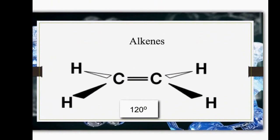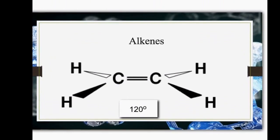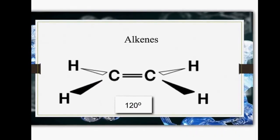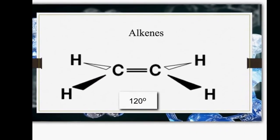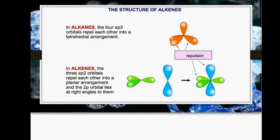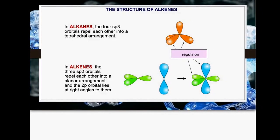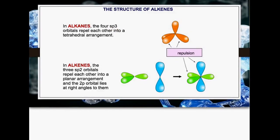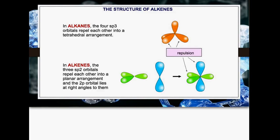This alkene is ethene. The angle between the bonds is 120 degrees and it forms a flat or planar structure. This diagram in orange shows a carbon with four orbitals around it. We say that it's been SP3 hybridised. You don't actually need to know about this terminology but it helps to understand it.